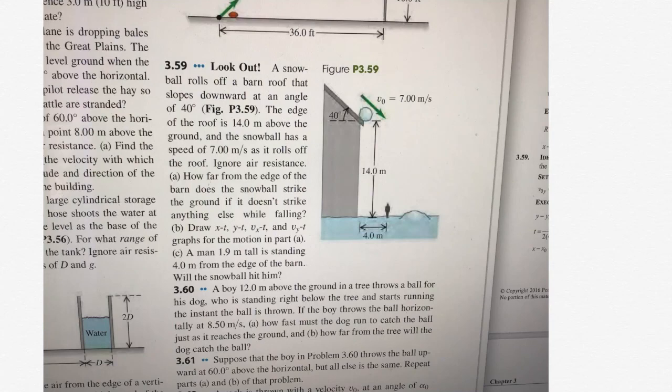In this problem we're looking at a two-dimensional problem that takes the form of projectile motion. This is a pretty tricky, challenging problem from chapter 3 of Jung and Friedman, question 3.59. A snowball rolls off a barn roof that slopes downwards at an angle of 40 degrees. It's 14 meters above the ground and has an initial speed of 7 meters per second as it rolls off the roof. We're ignoring air resistance and trying to figure out how far from the edge of the barn the snowball strikes the ground.